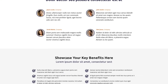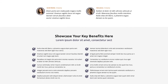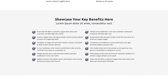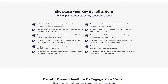Then we drop down into another bullet list, used here as a key benefits area. There's lots of white space, very easy to read, with little custom icons for the bullet points. Use this section to highlight a good list of features for your product or service.